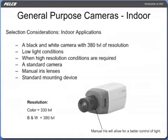The main consideration for indoor applications is generally a black and white camera with 380 TVL of resolution. When selecting a camera, it is important to consider low light conditions when high resolution is required. The camera should also be standard, have a manual iris lens, and a standard mounting device.